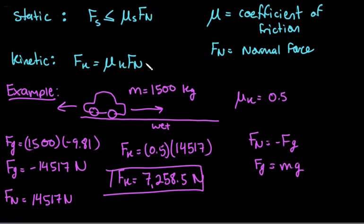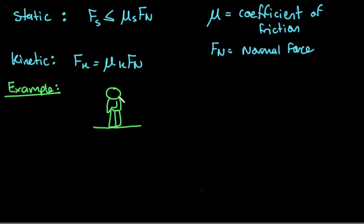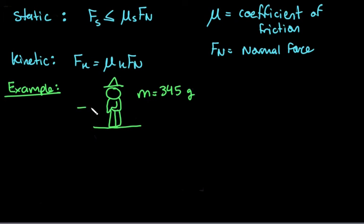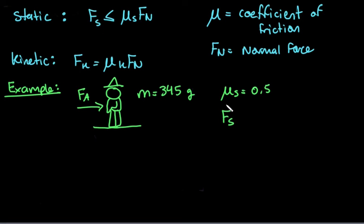Now let's take a look at an example of static friction, which tends to be a little more confusing because of the inequality. In this example, we have a wooden statue with a mass of 345 grams, and we want to know the maximum force that can be applied without making the statue move. We assume the coefficient of static friction is 0.5.